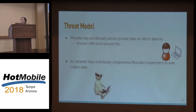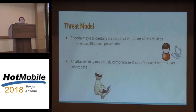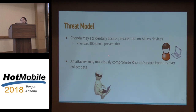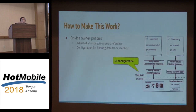With this kind of interaction, we have the following threat model. We assume that Rhonda may accidentally access private data on Alice's device. This cannot be prevented by her IRB because the IRB will not know about that. We also assume there may be an attacker who might maliciously compromise the experiment and collect whatever data he wants.